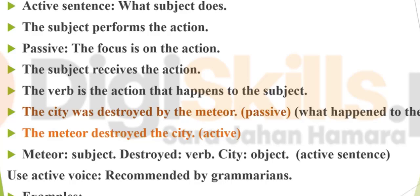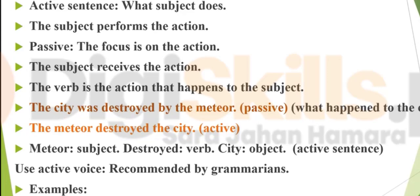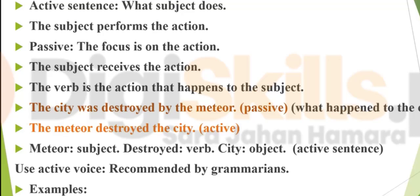Example: 'The boys caught several fish.' Boys is the subject, caught is the verb, and fish is the object. Convert it into a passive sentence. Fish starts the sentence. Depending on whether the subject is singular or plural, use 'was' or 'were.' We use the third form of the verb in passive sentences. So: 'Several fish were caught by the boys.' The action is performed on the subject.